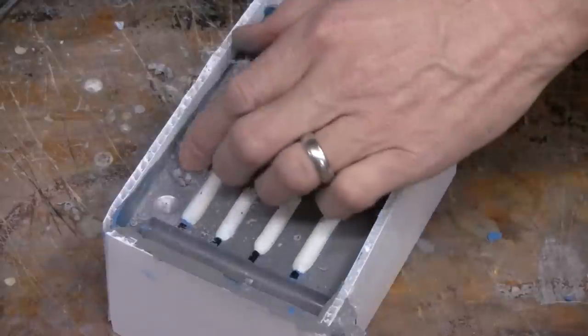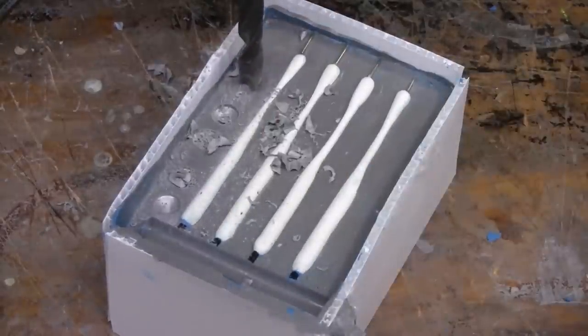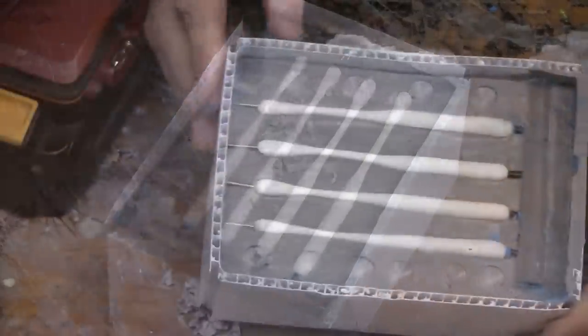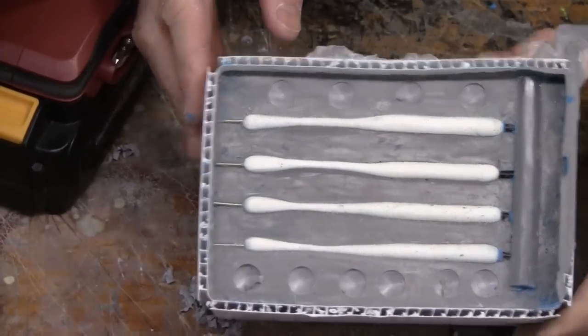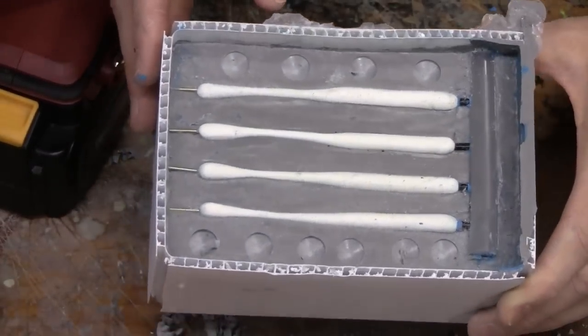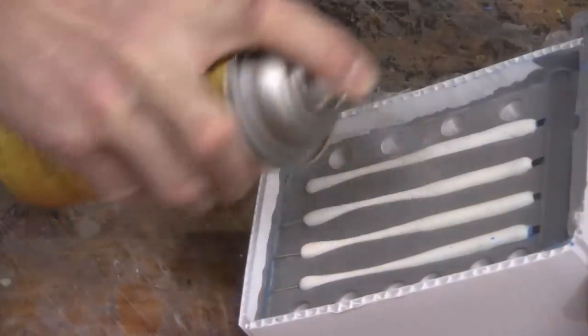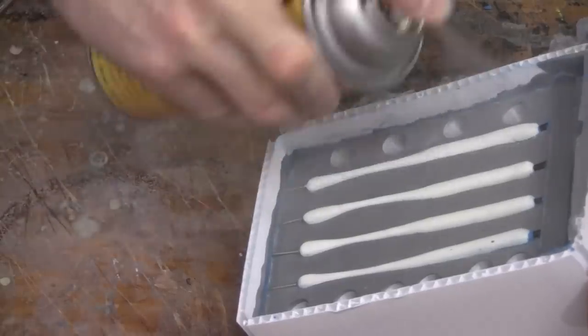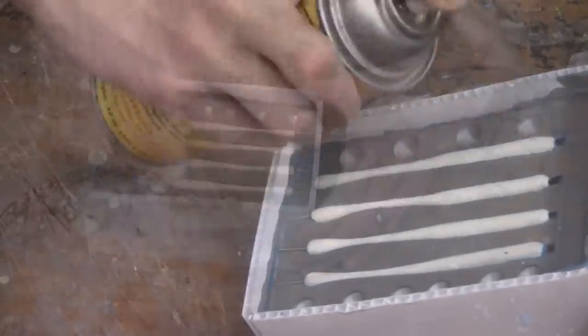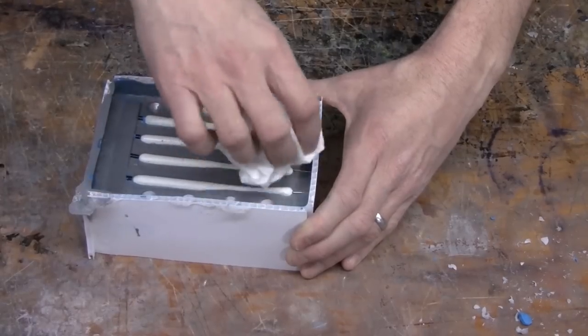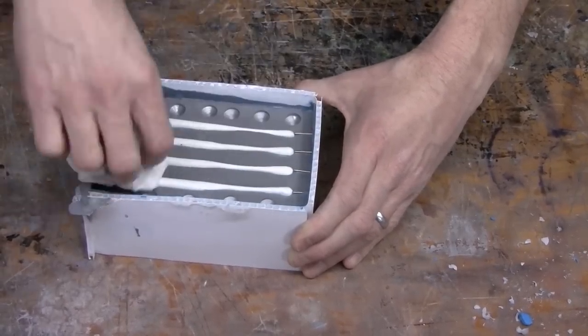Next, we want to add some locators. This will make sure that the two halves of the mold align perfectly. Here we're just using a drill bit and making impressions of approximately a quarter of an inch into the mold. Then we mold release this well using UMR and make sure it's clean before we're ready to start pouring the next half.